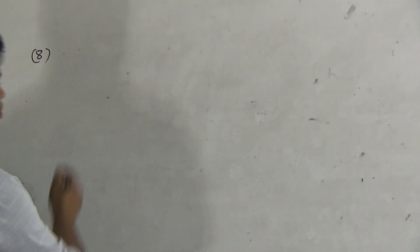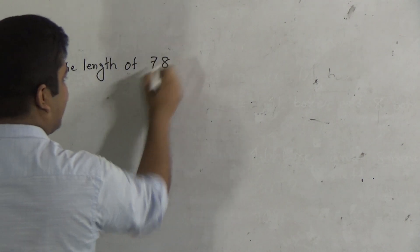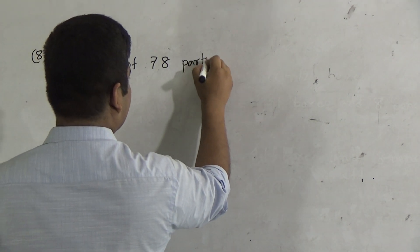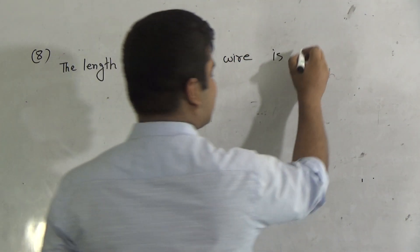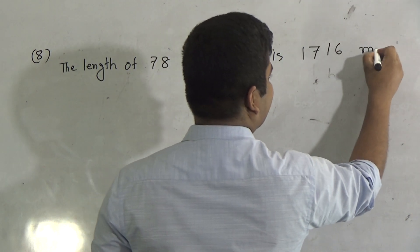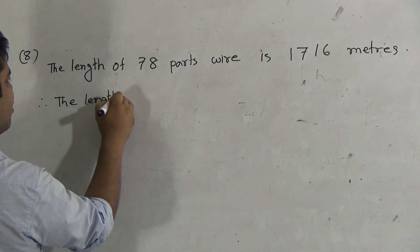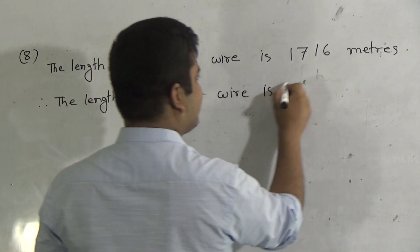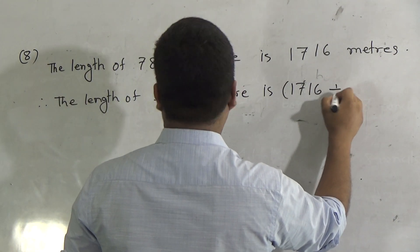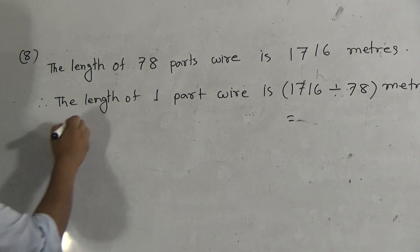So 8 number question. The length of the wire is 1716 meters. So the length of one part, one part where is, we do division 1716 divided by 78 meters. Now here we show the division procedure.